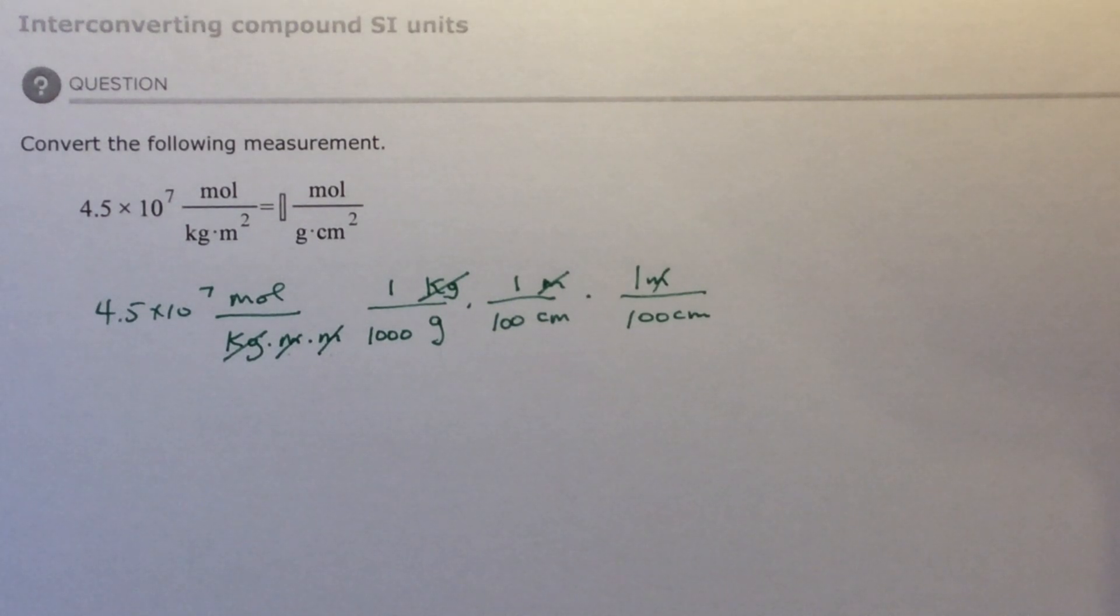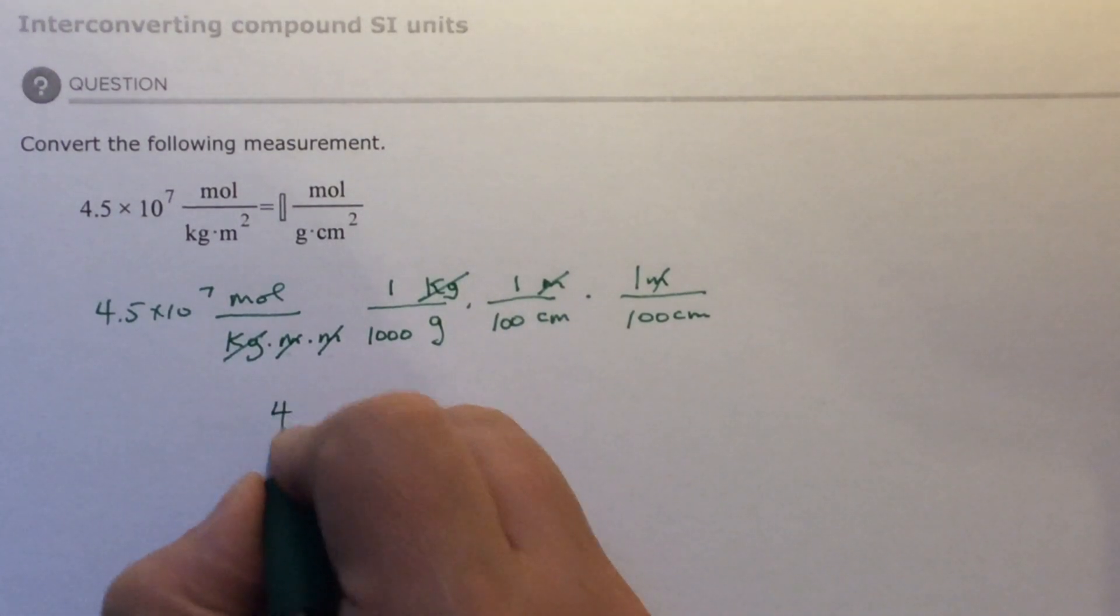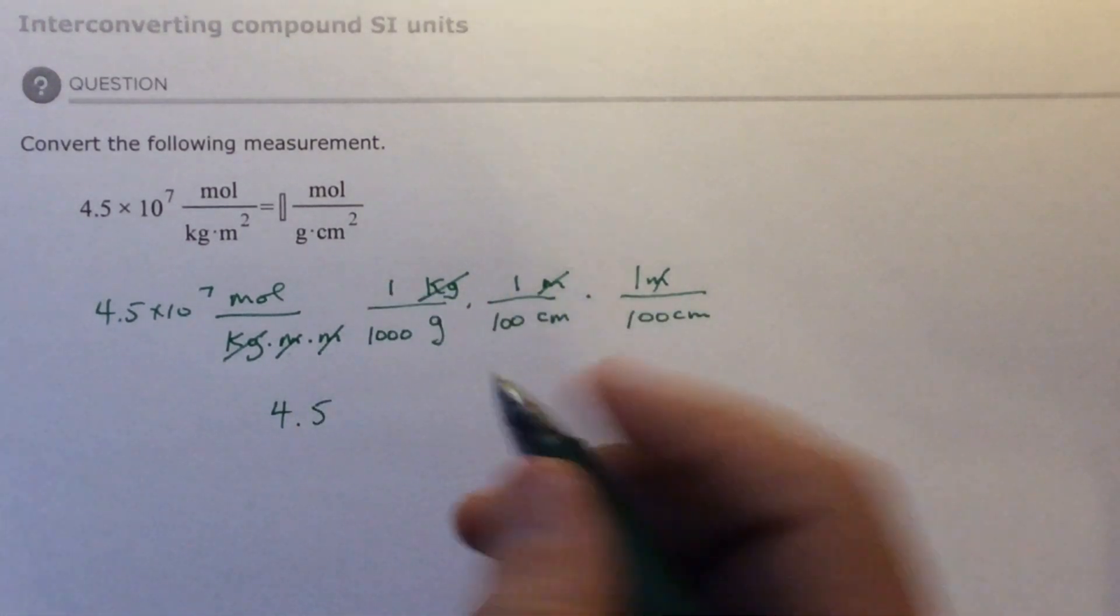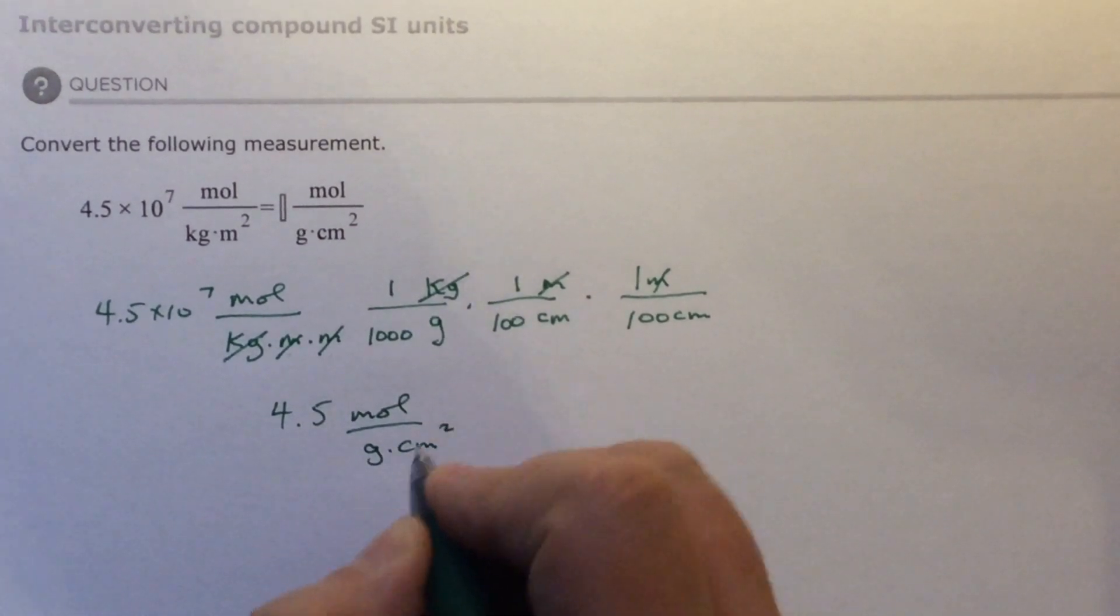Equals. And then divided by 100 again. And I have 4.5, and then that's all I have as far as a number and then moles over grams centimeters squared.